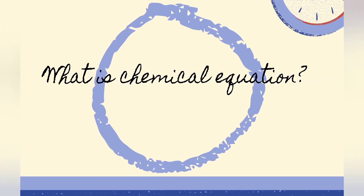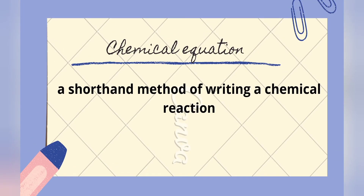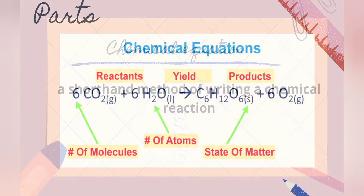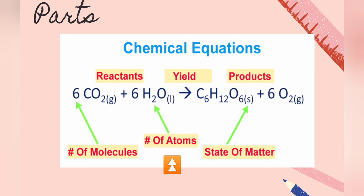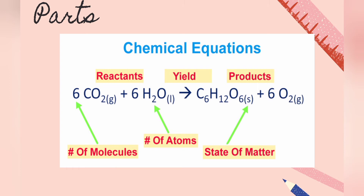What is a chemical equation? A chemical equation is a shorthand method of writing a chemical reaction. In other words, it is the representation of a chemical reaction. These are the parts of chemical equations: we have the reactants on the left side and product on the right side. We also have the subscript as the number of atoms, and the state of matter enclosed in parentheses — solid, liquid, or gas — coefficient that determines the number of molecules, and the arrow which means yield or to produce.